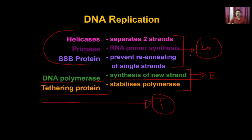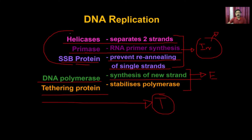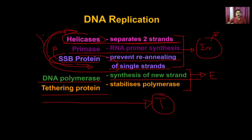Scientists decided not to use all these enzymes for genetic engineering because they must work in a very coordinated fashion — if SSB comes before helicase, they cannot work properly. Instead, scientists chose to use only DNA polymerase for genetic engineering. The question is: how can DNA polymerase be utilized for genetic engineering?